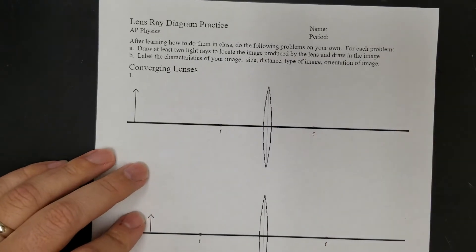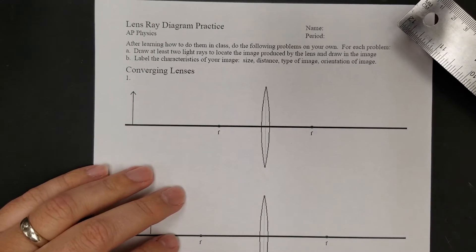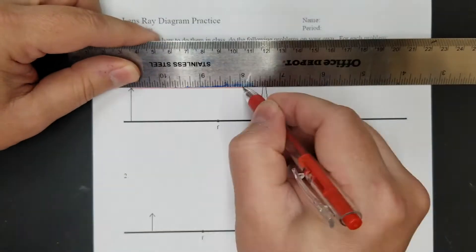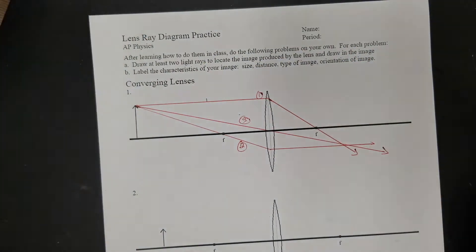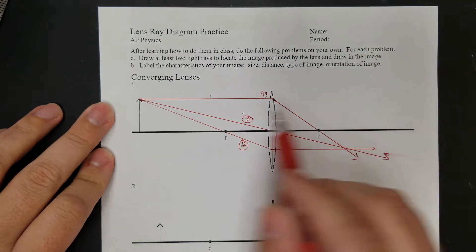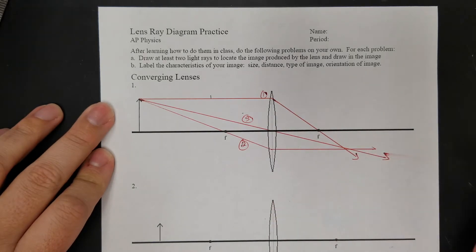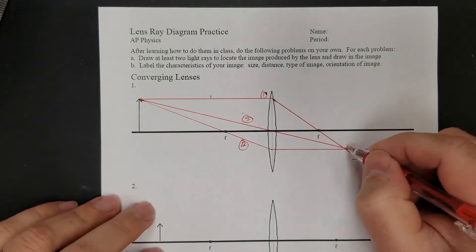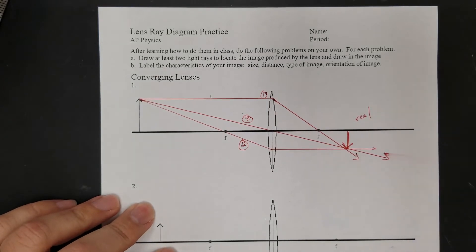I'm going to do this first one and draw ray 2, just to be thorough. Here's a ray diagram for an object outside of the focal point of a converging lens. Ray 1 goes parallel to the principal axis, through the focal point. Ray 2 goes through the focal point and out parallel to the principal axis. Ray 3 goes straight through the center. They all meet right there, so the image is right there. This is a real image because it's inverted.